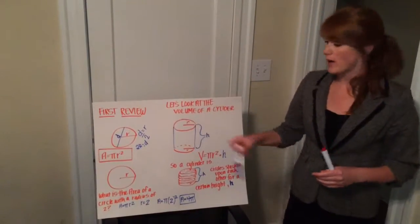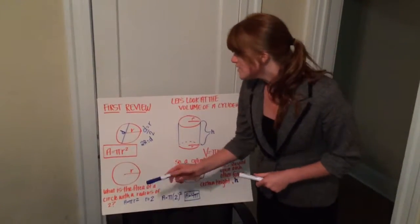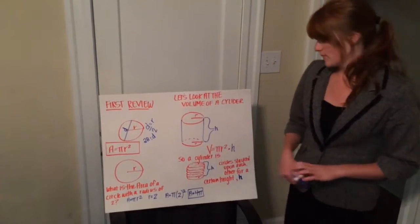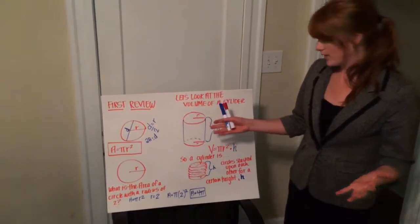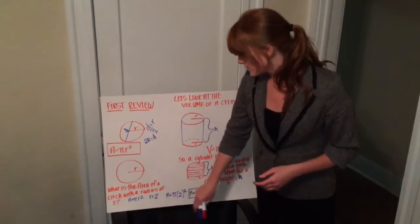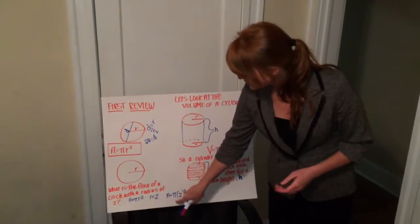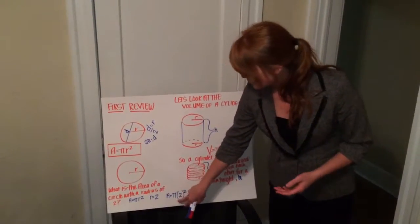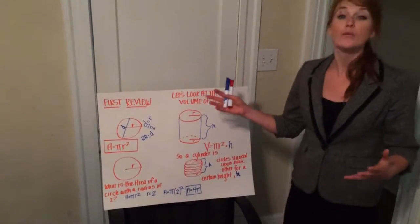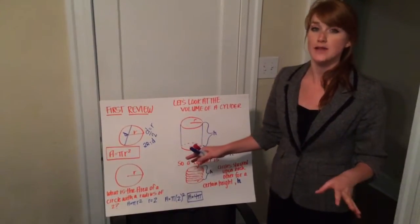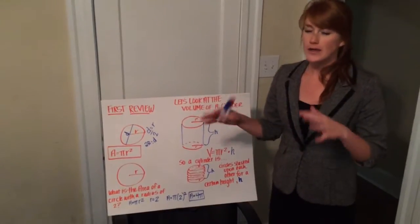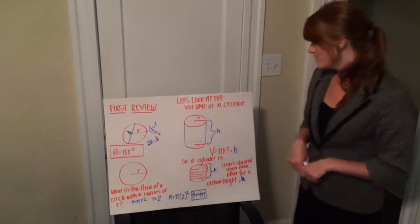Let's work on a problem first, just to review. What is the area of a circle with a radius of 2? Area equals pi r squared. So let's plug in 2 for the radius. We get area equals pi times 2 squared. So our area is 4 pi. Let's just leave it in terms of pi today, so we won't have to use our calculator — just for easiness.